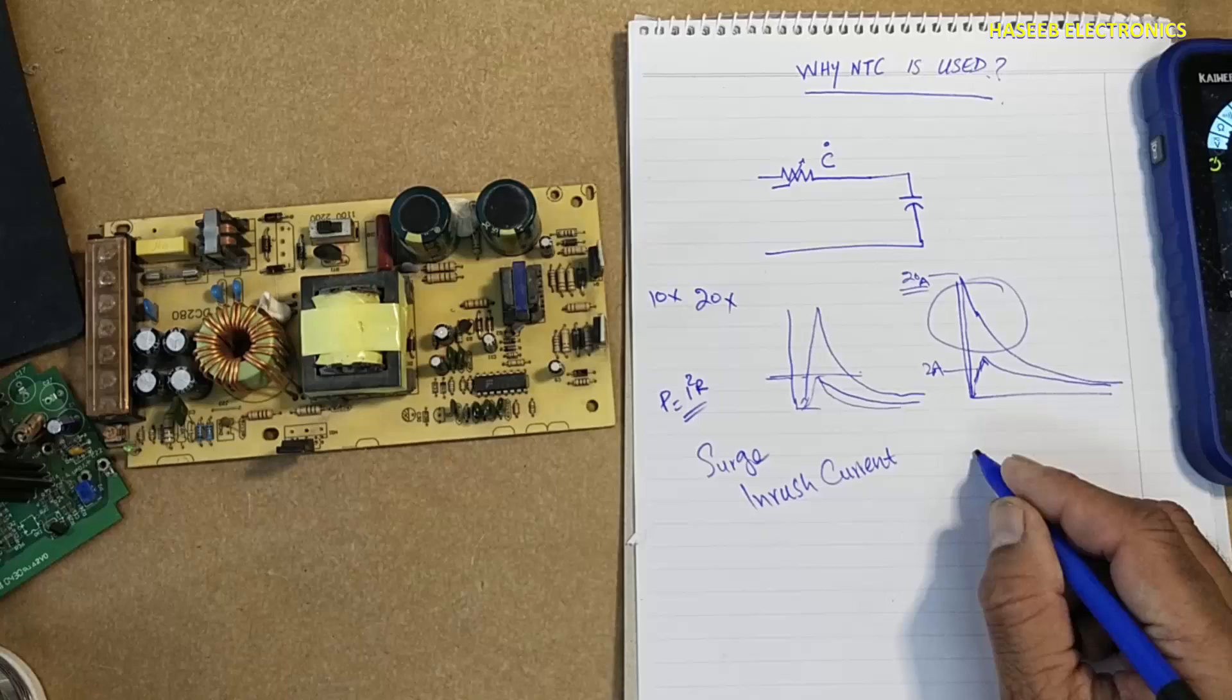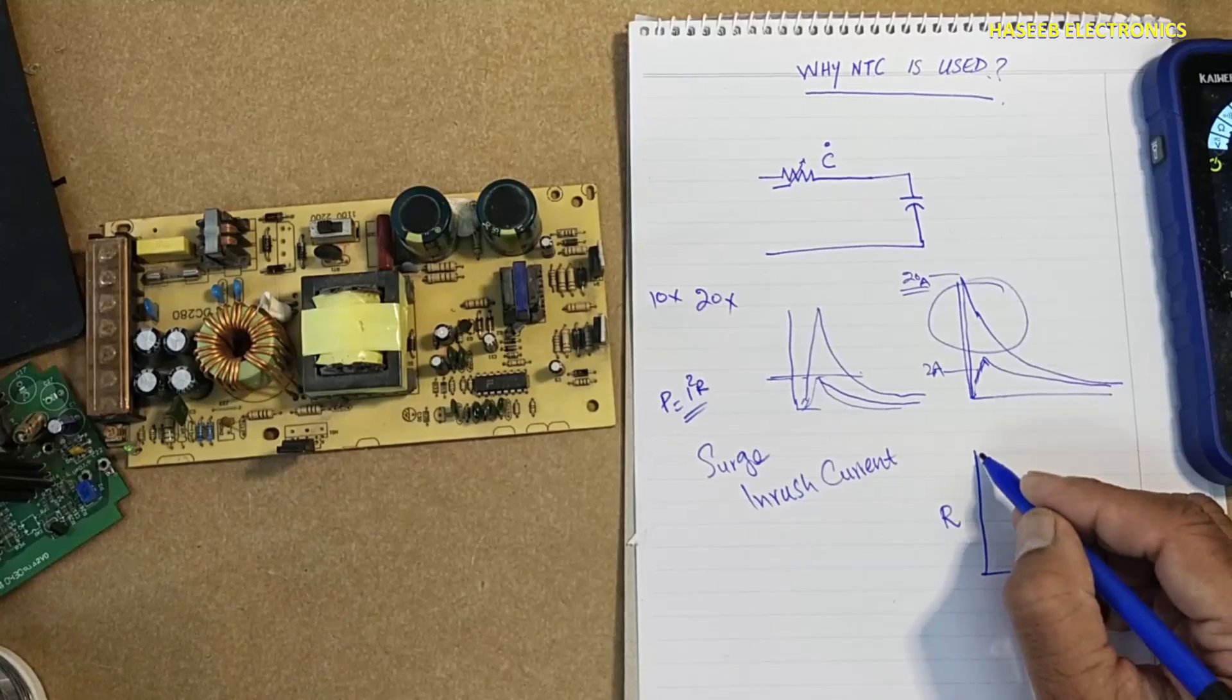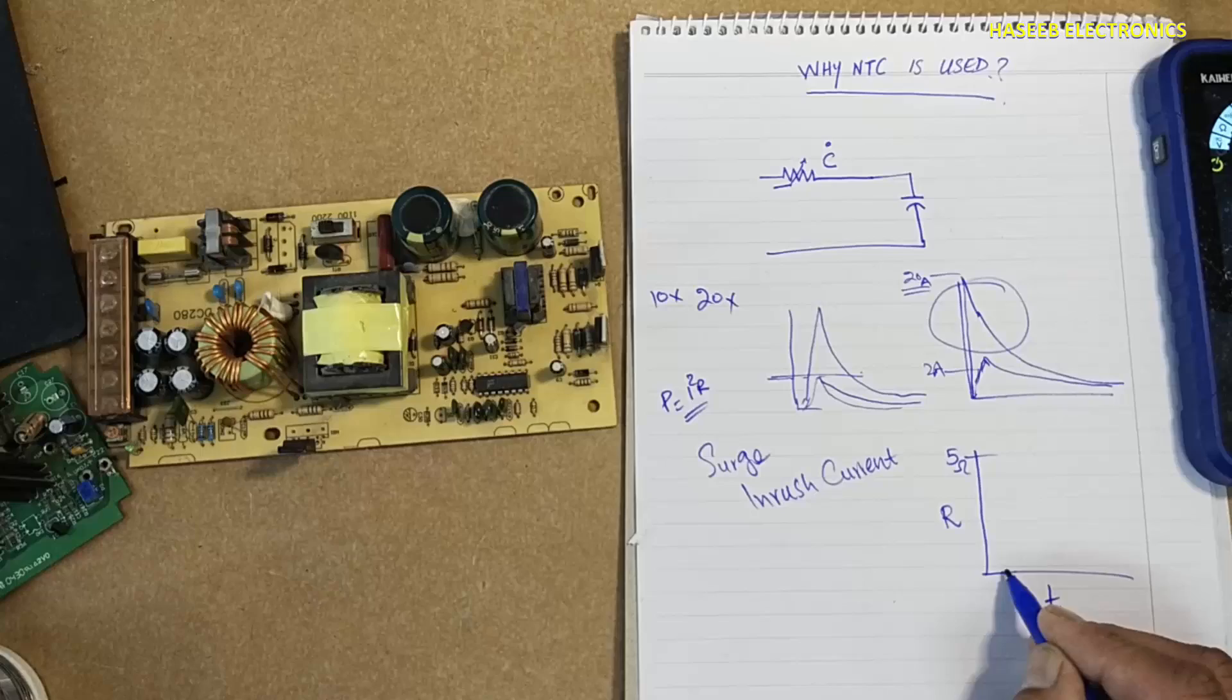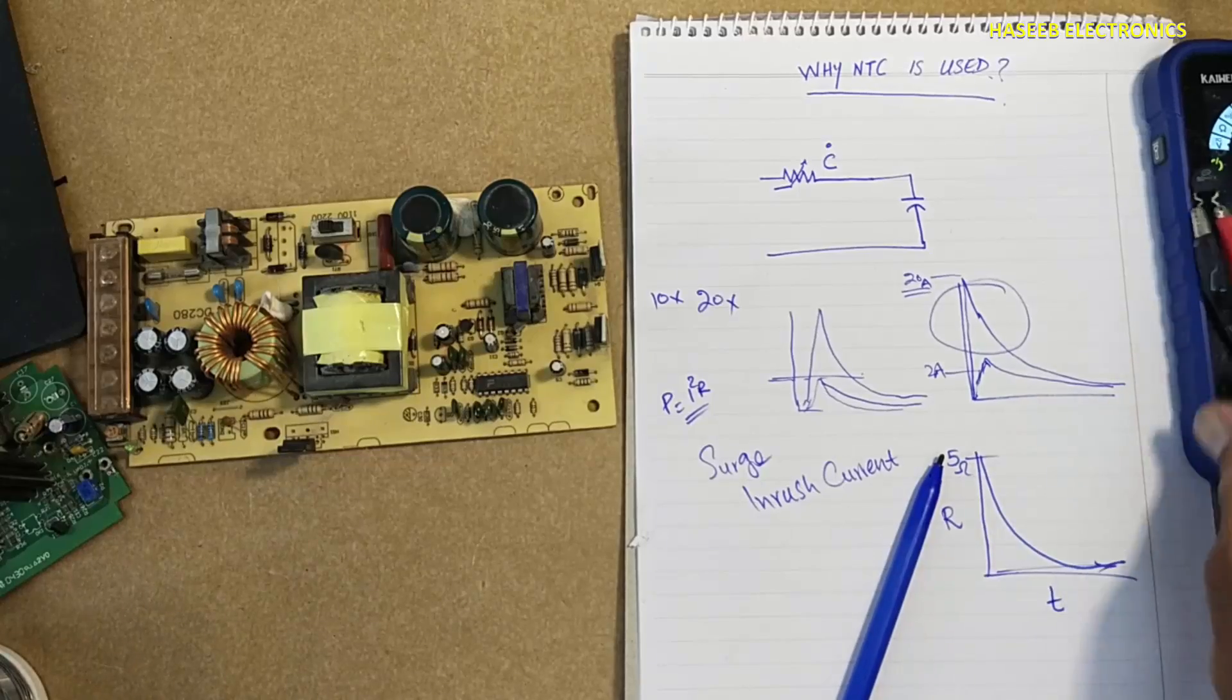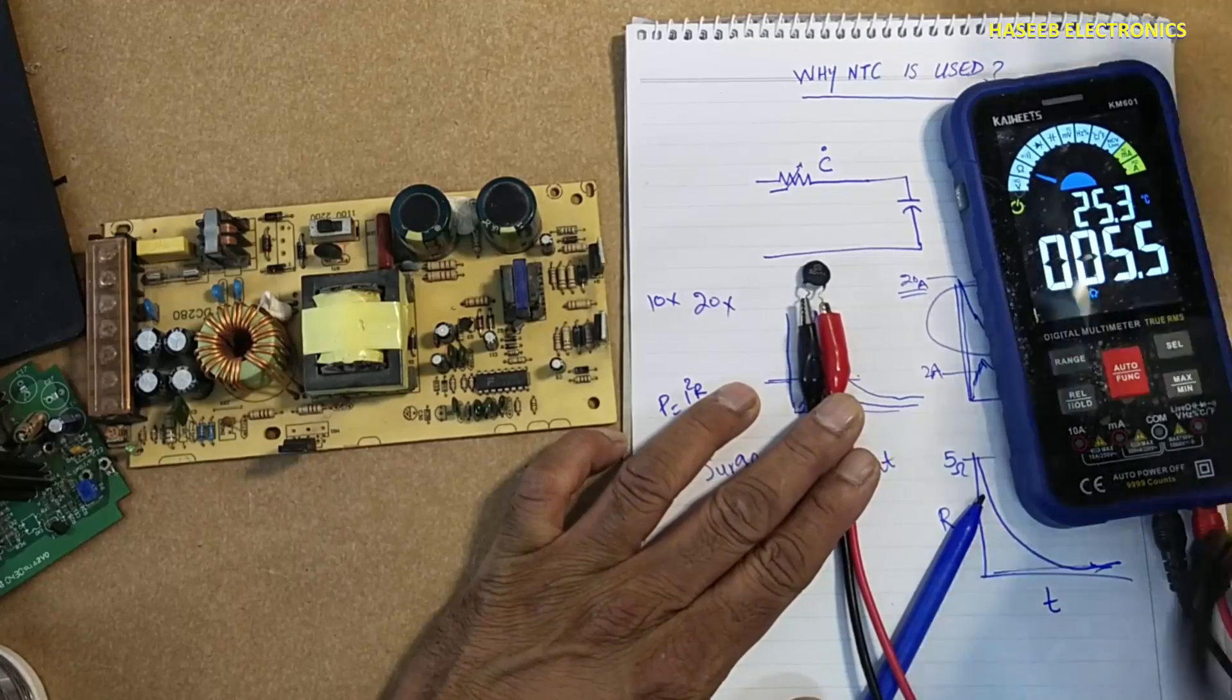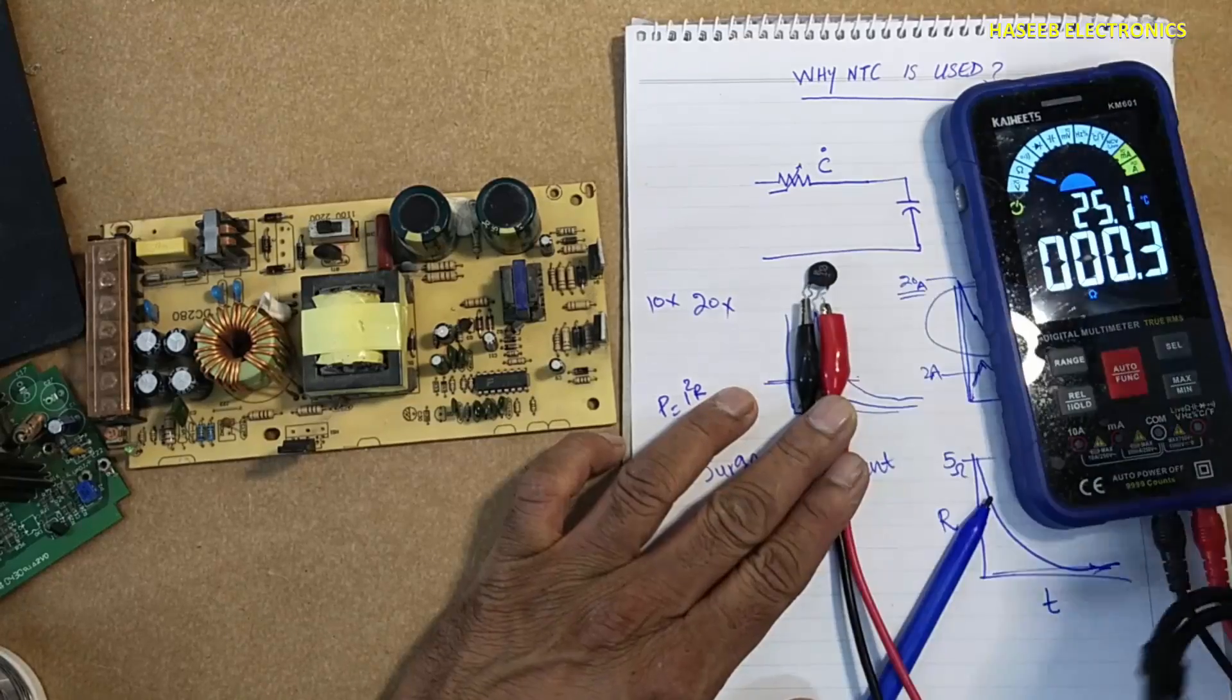Normally its resistance is high. And this is temperature. Normally its resistance is 5 ohm. When the temperature will increase, its resistance will decrease, as we checked here. When the temperature is increasing, the resistance is decreasing.